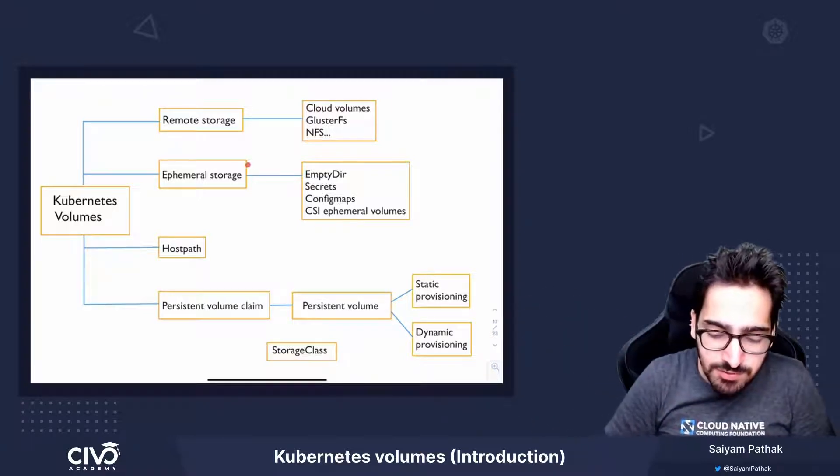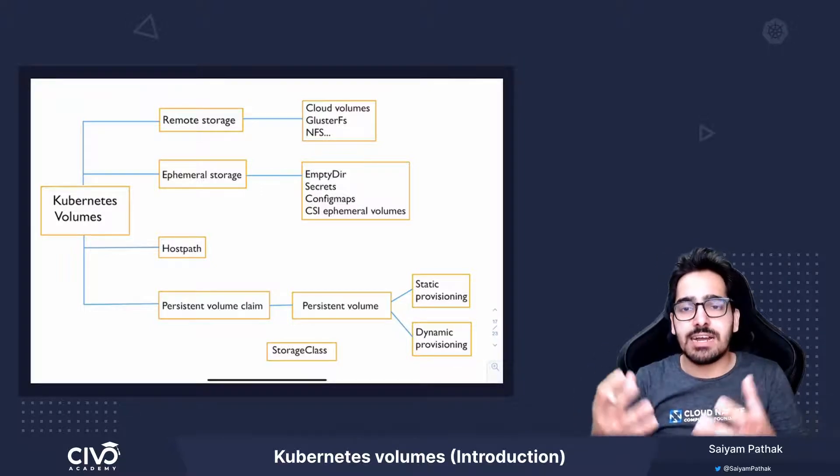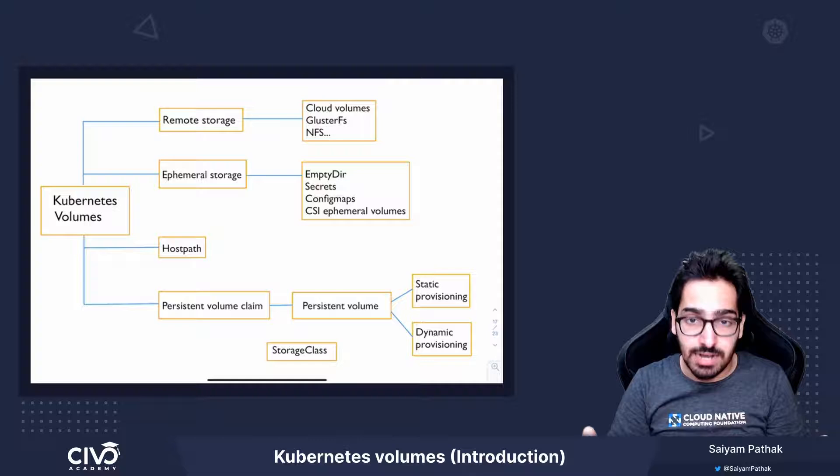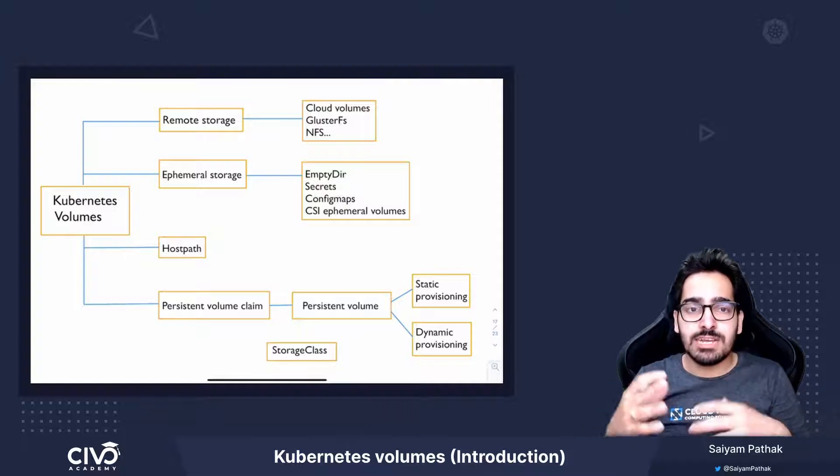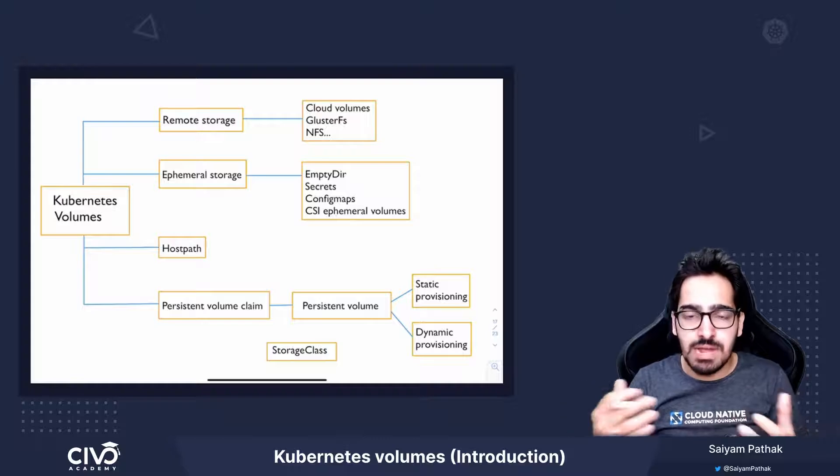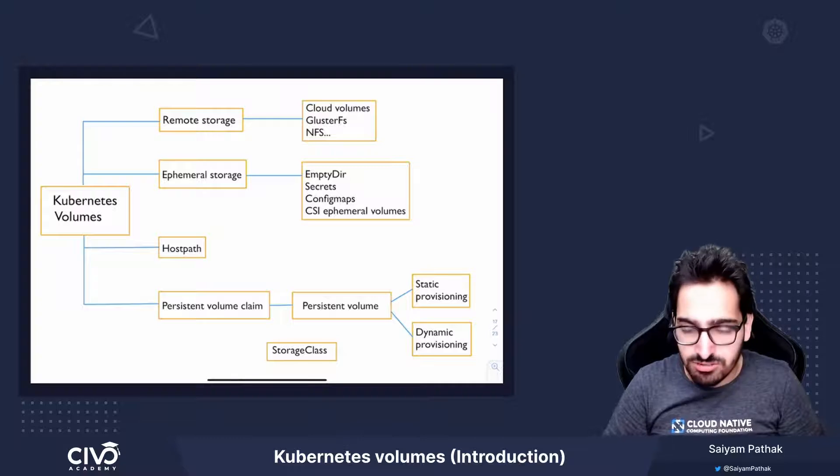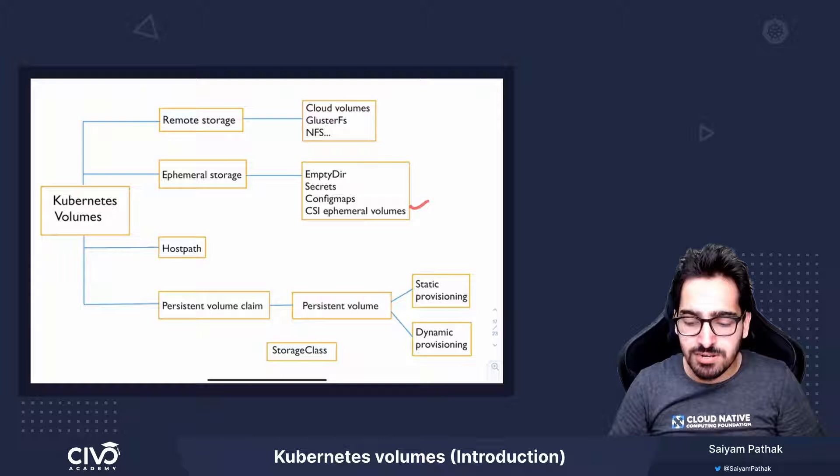Then you have ephemeral storage. Ephemeral storage is something that the container needs when it's running, like for caching or secrets mounting, config map usage. All these volumes are there as ephemeral storage: emptyDir, secrets, config map, CSI ephemeral volumes.